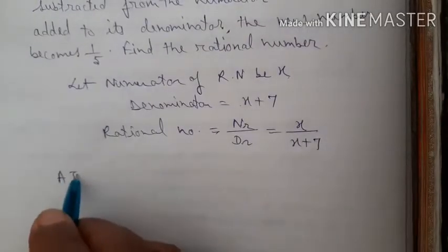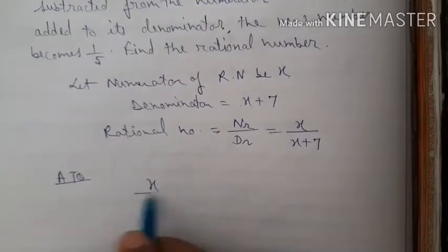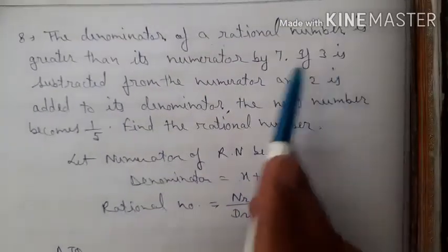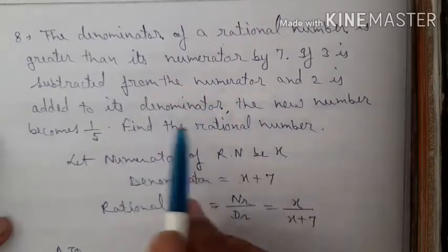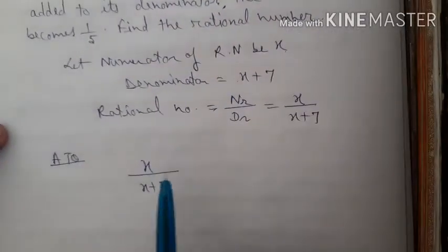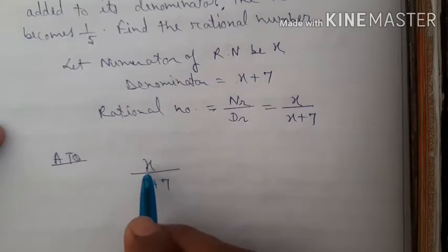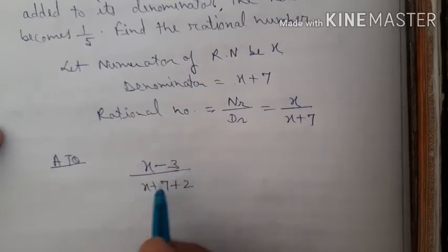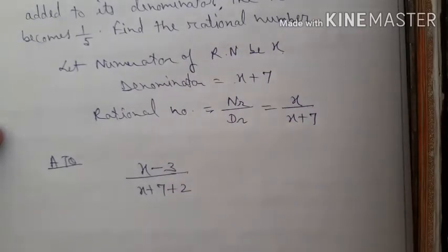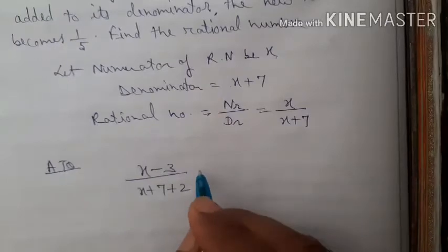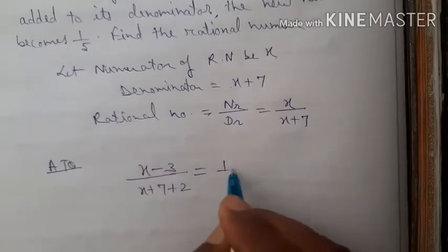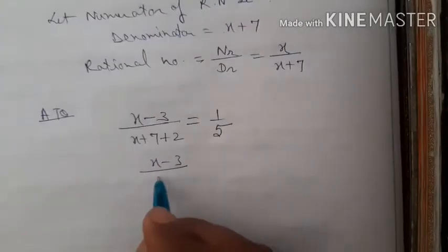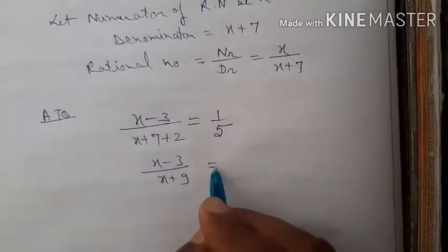According to the question, if 3 is subtracted from the numerator and 2 is added to the denominator, the fraction becomes 1 by 5. So: (x minus 3) by (x plus 7 plus 2) equals 1 by 5, which simplifies to (x minus 3) by (x plus 9) equals 1 by 5.